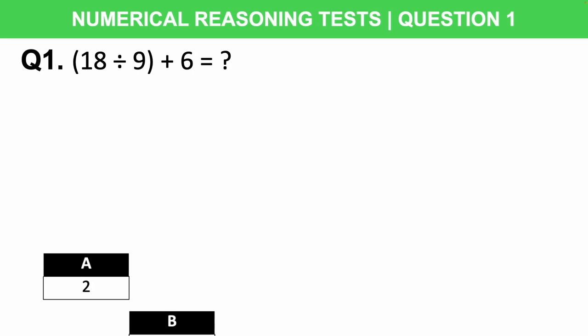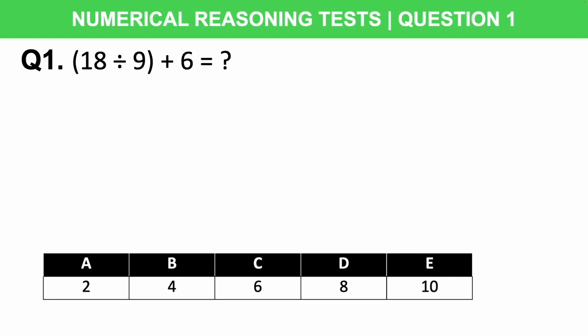During the numerical reasoning part of the McCaig Assessment Tests you will have to answer 15 questions that test your mathematical ability. The questions will cover areas such as mental arithmetic, percentages, and word problems. During this assessment you will not be able to use a calculator, but you are permitted to use a blank piece of paper to help with your calculations.